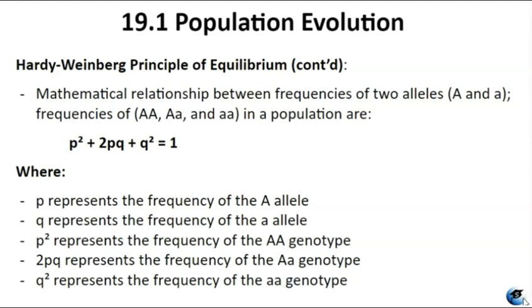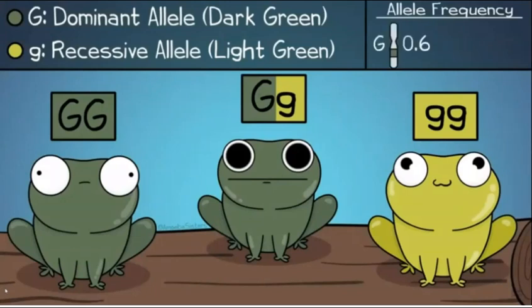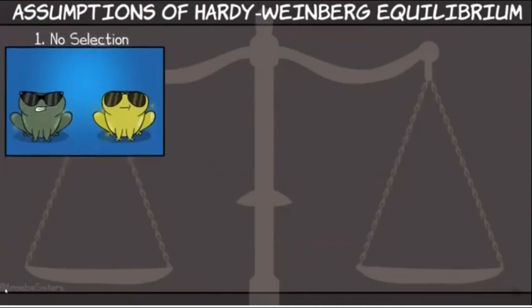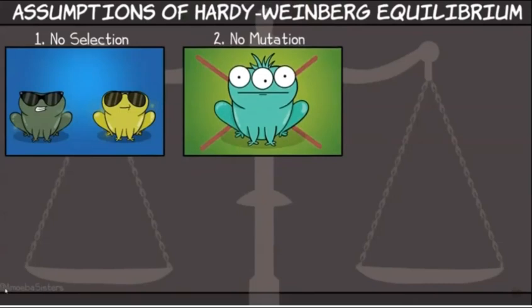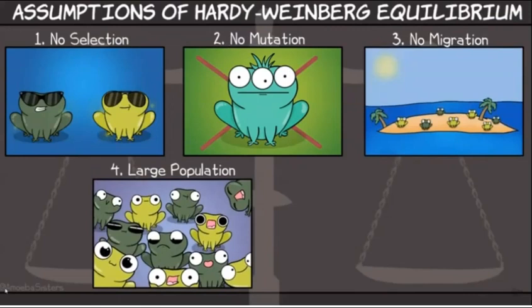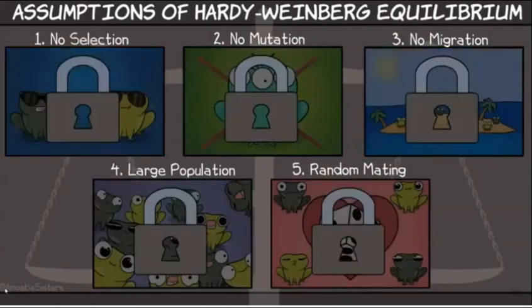Let's watch an example of how to calculate allele and genotype frequencies using the Hardy-Weinberg equations. All frogs in this population will be either GG, Gg, or gg. In this population, 60% (frequency 0.6) of the alleles are big G, and 40% (frequency 0.4) are little g — the percentages add up to 100% and the frequencies add up to 1. To be in Hardy-Weinberg equilibrium, five assumptions must hold: no selection, no mutation, no migration, large population, and random mating. In real life, this generally doesn't happen — for example, predators may more easily see light-green frogs, giving them less reproductive fitness. So if Hardy-Weinberg equilibrium is unrealistic in nature, why does it matter? It gives a baseline to compare how an evolving population could differ from one with no evolutionary forces acting upon it.